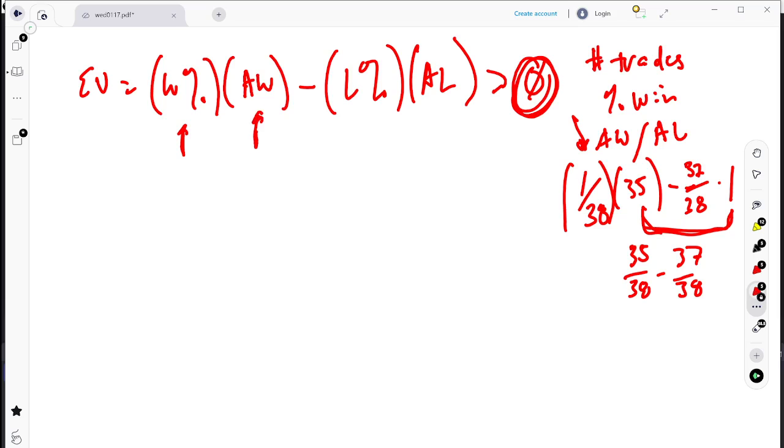You could also increase your average winner. You can do that by holding on longer. Don't sell out of your winners too quickly. Don't just execute at 2R or 3R. And especially if you want to make the big money, not scalping or day trading, you can certainly hold things overnight over the weekends. That's probably the easiest thing to do. Harder to do emotionally, but easy to do trading-wise. You just don't offset it.